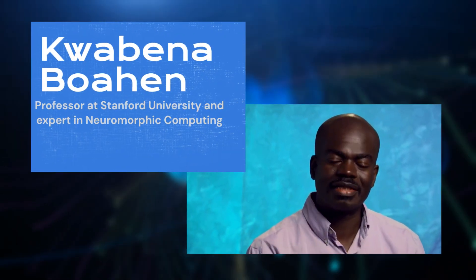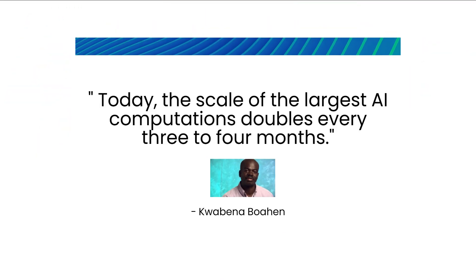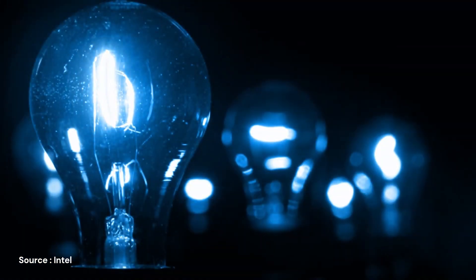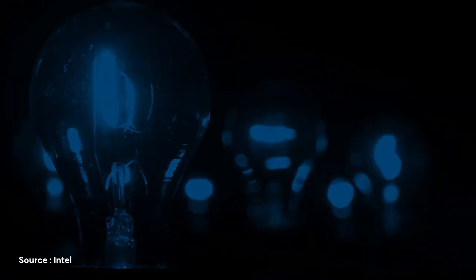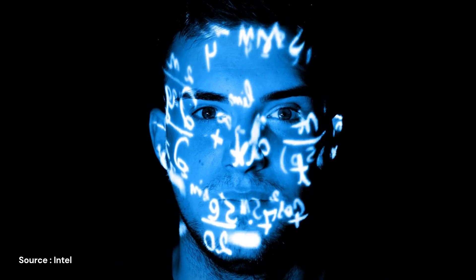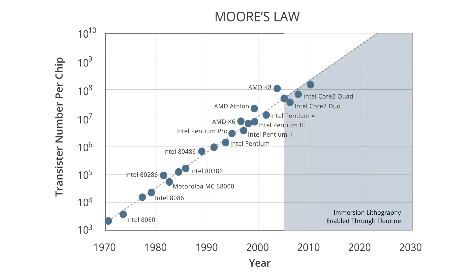According to Kwabena Boahen, a professor at Stanford University and an expert in neuromorphic computing, the scale of AI computation is doubling every three to four months in today's world. This emerging technology not only enhances the speed of general computational processes but also opens up a new avenue towards surpassing the limitations of Moore's law.